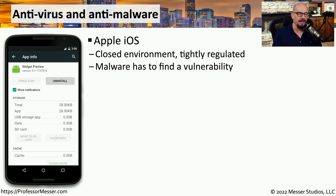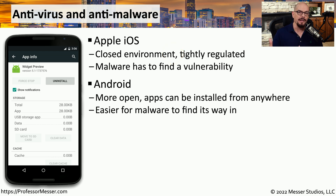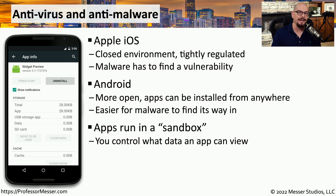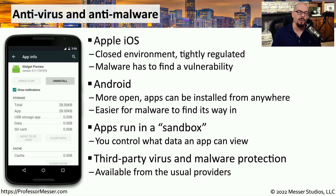Attackers know that you keep personal data on mobile devices and are constantly trying to find ways to get in using malware or other vulnerabilities. The closed environment used by Apple's iOS makes finding vulnerabilities and installing malware difficult. An attacker would need to find an undiscovered vulnerability to gain access to an iOS device. The Android operating system is more open — you can install applications from any website, which means an attacker could potentially have you download a Trojan horse onto your Android device. In both cases, applications run in a sandbox inside the operating system, limiting their access to data and resources. Antivirus and anti-malware options are available for both iOS and Android in their respective app stores.